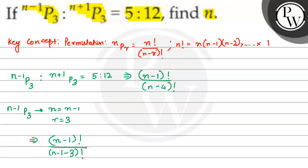Now, n plus 1 P3 equals n plus 1 factorial upon n plus 1 minus 3 factorial, upon n minus 3 factorial. Clear, right? Very easy. So n plus 1 factorial upon n minus 2 factorial equals 5 by 12.